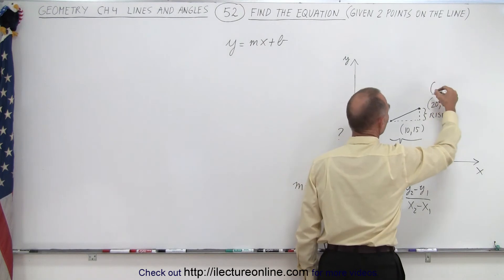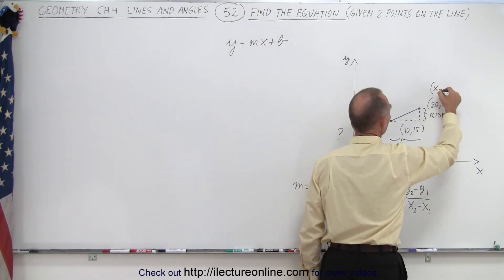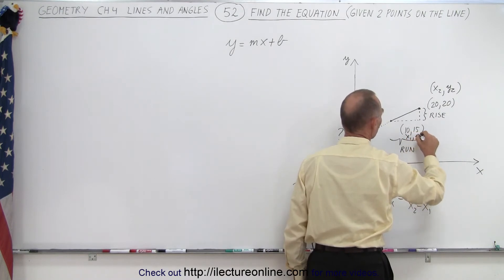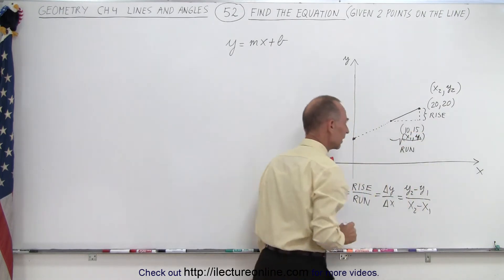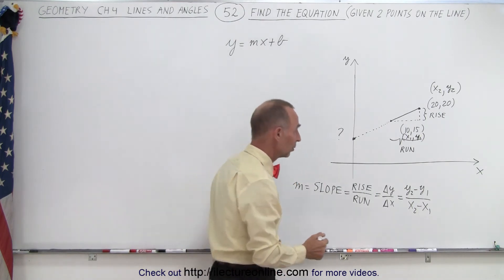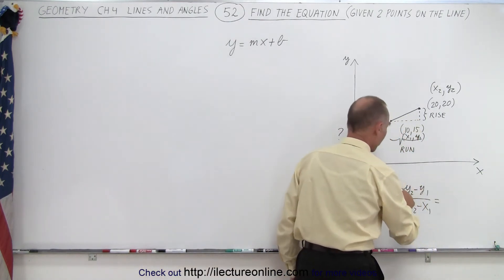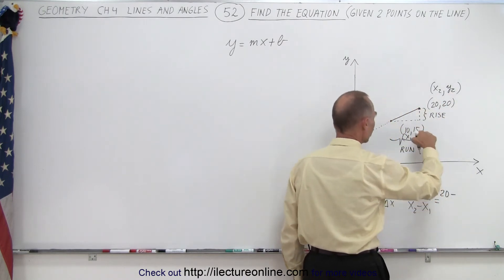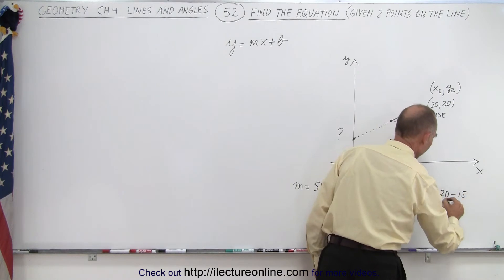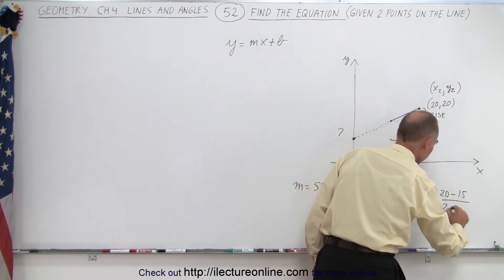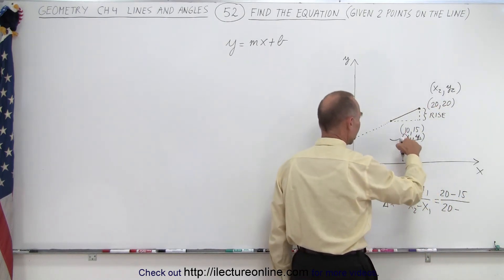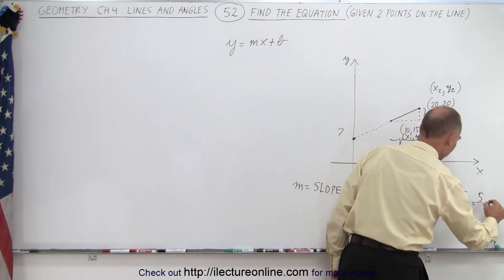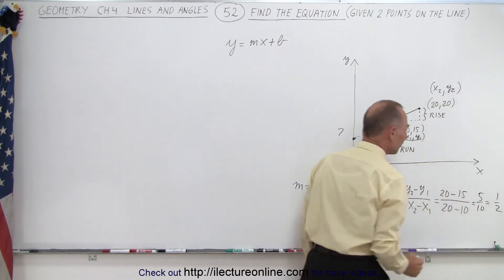And then we can label these points. We can label this as point 2, so this is x2, y2. And here we can say that this is x1 and y1. We'll squeeze it in there like that. And then simply, we go ahead and do those two subtractions. We have y2 minus y1, so y2 is equal to 20 minus y1, which is equal to 15, divided by x2, which is equal to 20, and x1, which is equal to 10. So here you can see that's equal to 5 over 10, which is 1 half simplified.